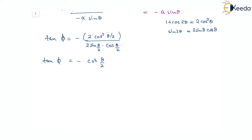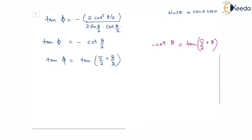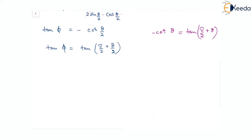Since minus cot theta by 2 is equal to tan of pi by 2 plus theta by 2, we can say that tan phi equals tan of pi by 2 plus theta by 2. Comparing both sides, we get phi equal to pi by 2 plus theta by 2. This is the angle between the tangent and the radius vector.